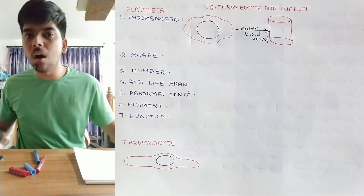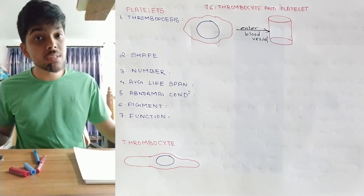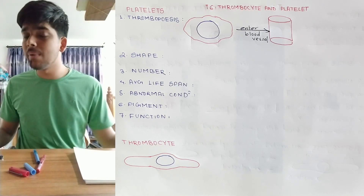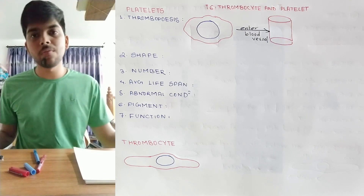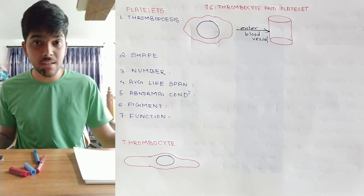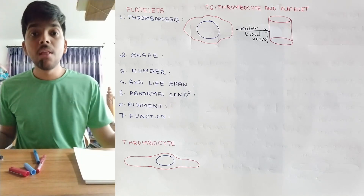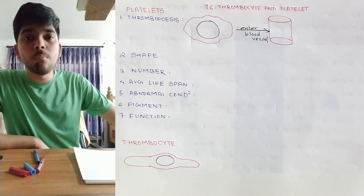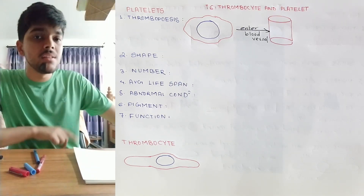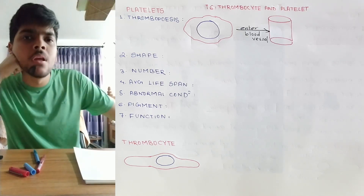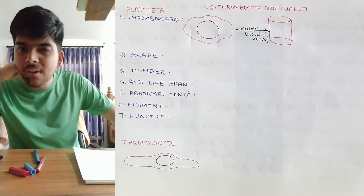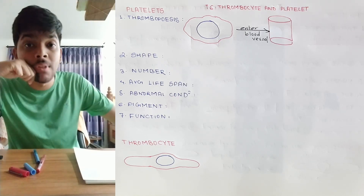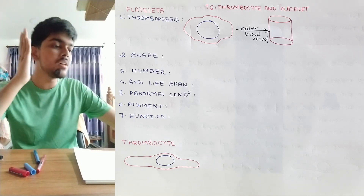We are starting off with the sixth topic under blood, which is thrombocyte and platelet — the third formed element. We are already done with two out of three formed elements: red blood cells and white blood cells. Now, you might have noticed I said 'thrombocyte and platelets' instead of 'thrombocyte or platelet.' Does that mean they are completely different, or do they have some similarity? Let's find out.